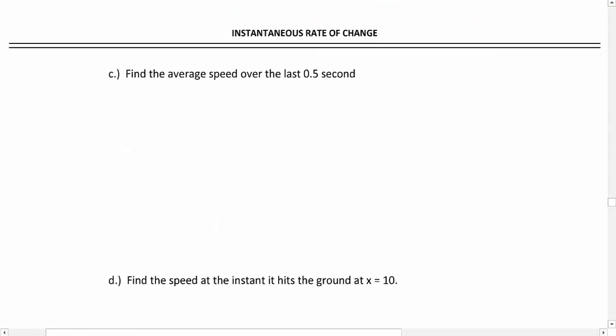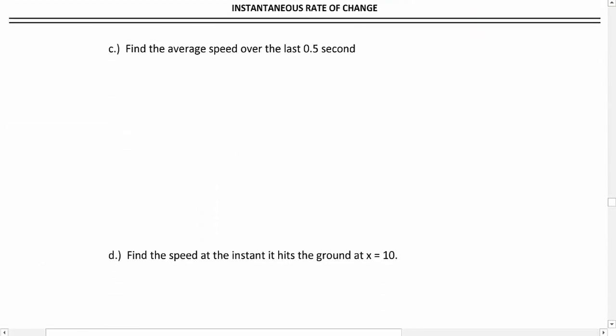In part c, we want to find the average speed over the last half a second. Again, it's saying average, this doesn't require calculus. This will be average rate of change again. We need to get our x₁, x₂, f(x₁), f(x₂), and then we'll plug in.